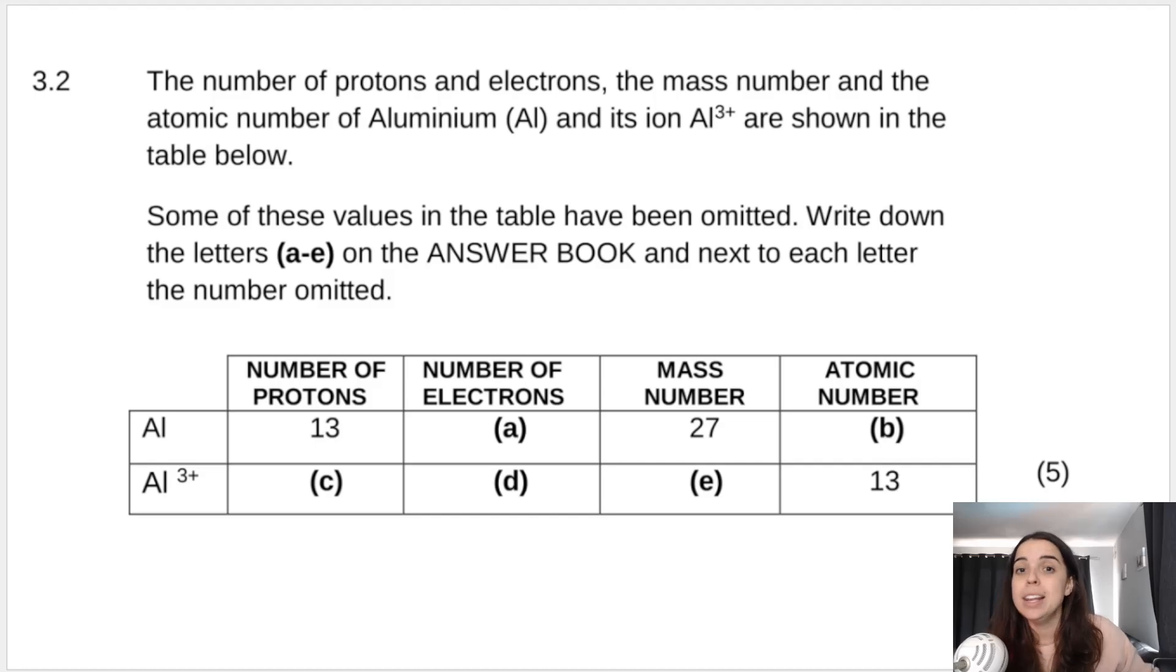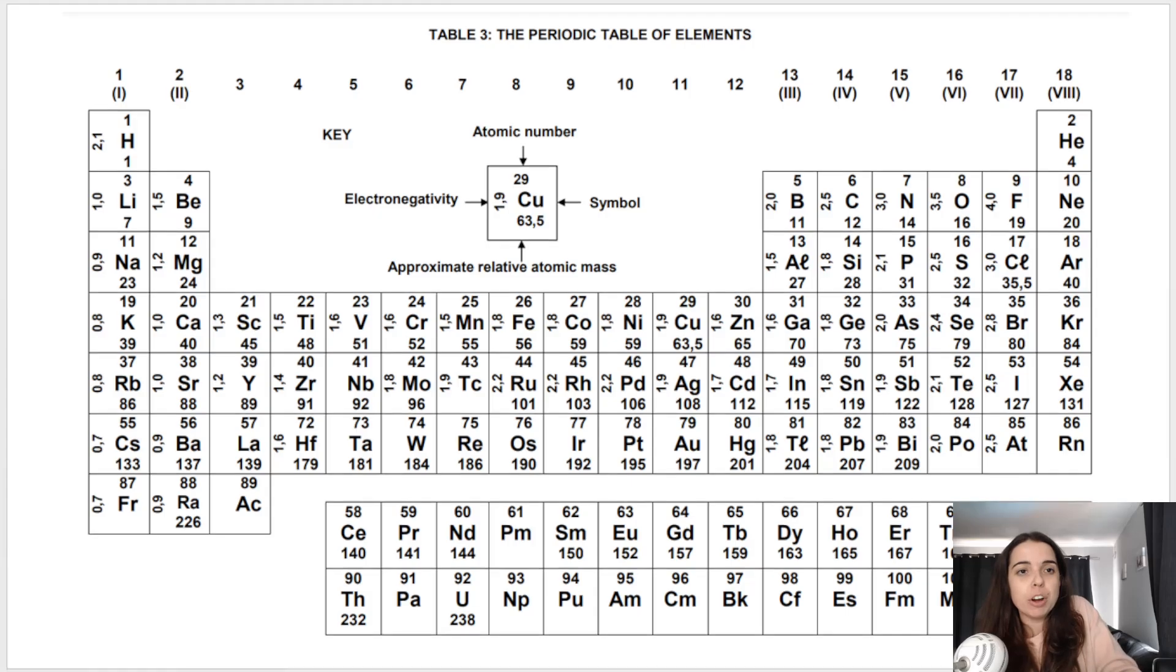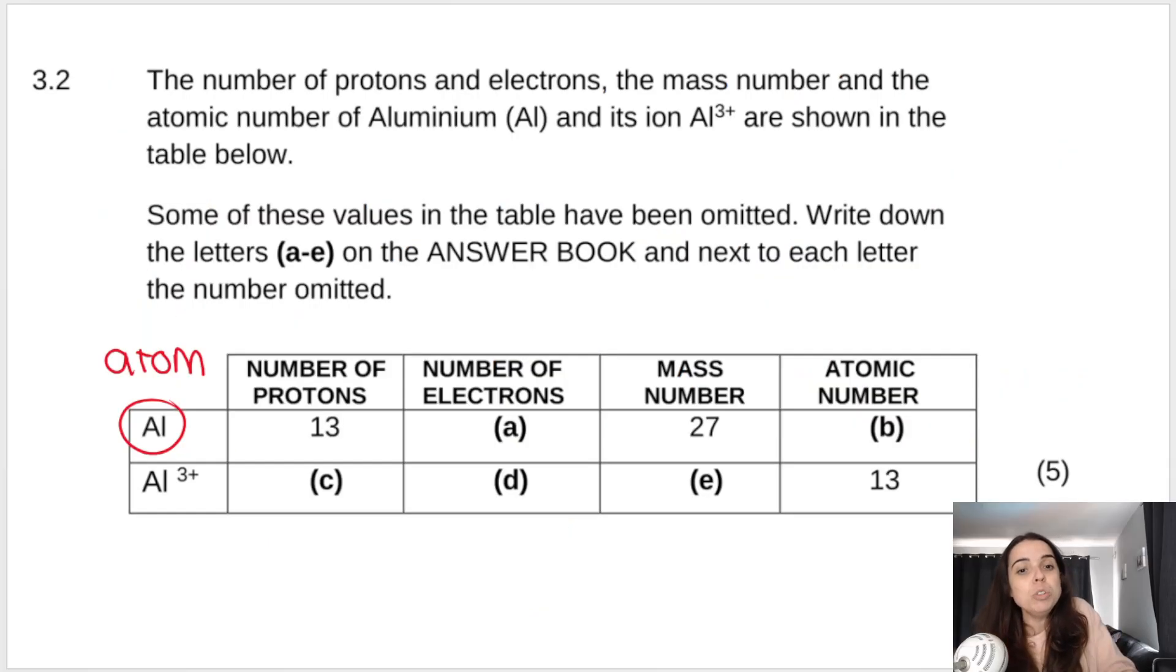Right, let's move on. The number of protons and electrons, the mass number, and the atomic number of aluminum and its ion, Al3+, are shown in the table below. Some of the answers or the values have been omitted, so they've been left out. And we must fill in for five marks, the remaining answers. Now, first things first, you get two things in this type of question. You get an atom, which in this case, aluminum is my atom. Atoms are neutral. They don't have a charge. So Al, neutral atom. You can find it on the periodic table. And I just spoke about aluminum earlier, weirdly enough. There's aluminum. We can read off all the information for aluminum from the periodic table as is.